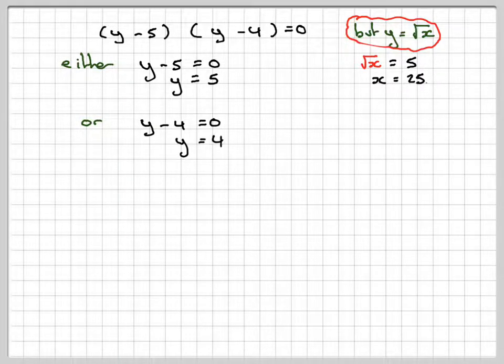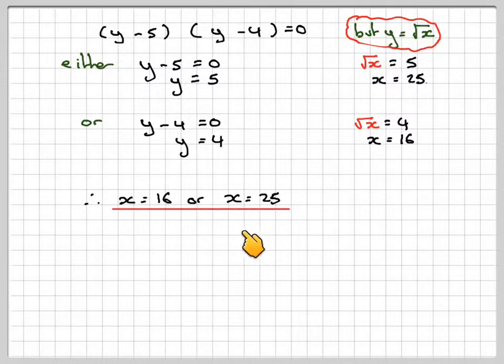Or y minus 4 is equal to 0. We get that y is equal to 4. Same idea. Square root of x is equal to 4. x will be equal to 16. Therefore, we've got two solutions. x is equal to 16 or x is equal to 25.